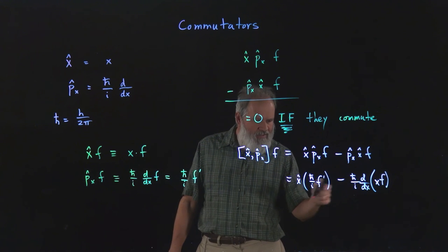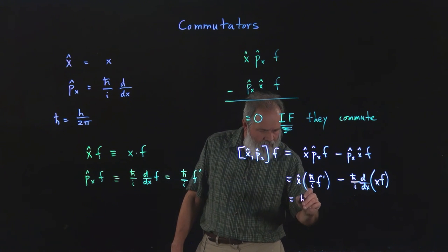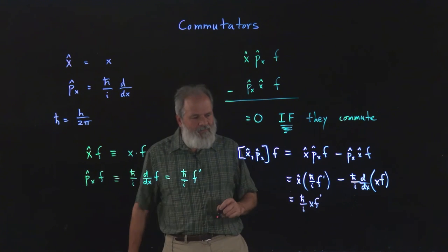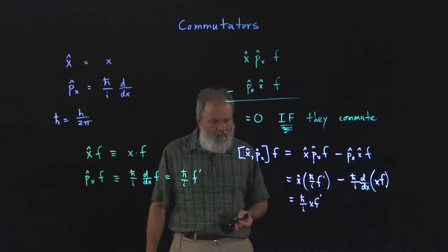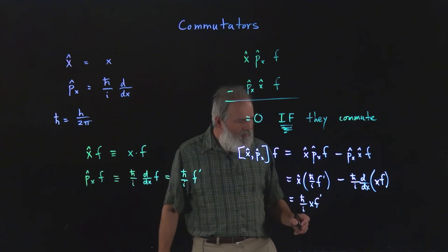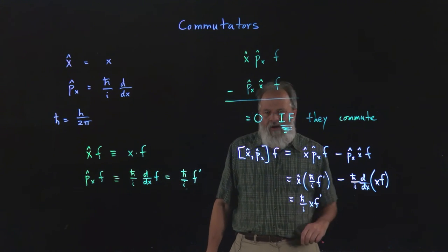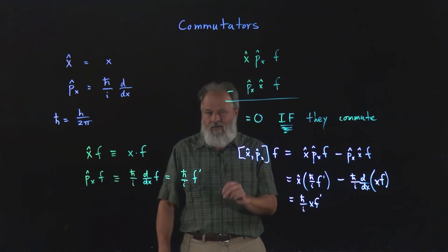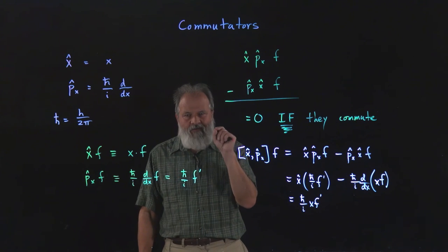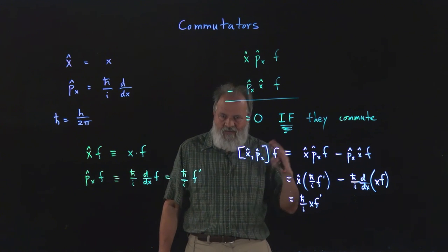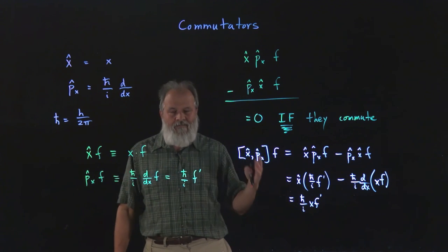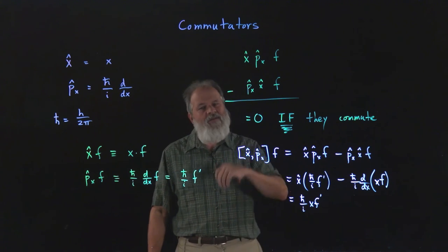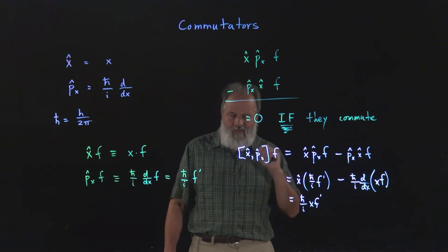Now multiplying by x just means that. So the first term is basically x times f prime. Now this is a product of two different functions of x, and so we have to use the product rule, which means you take for a product, you take the derivative of the first term times the second one's original function, plus the derivative of the second term times the original function for the first part of the product.